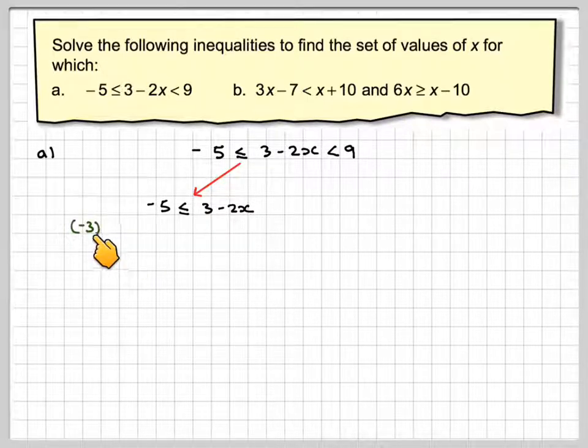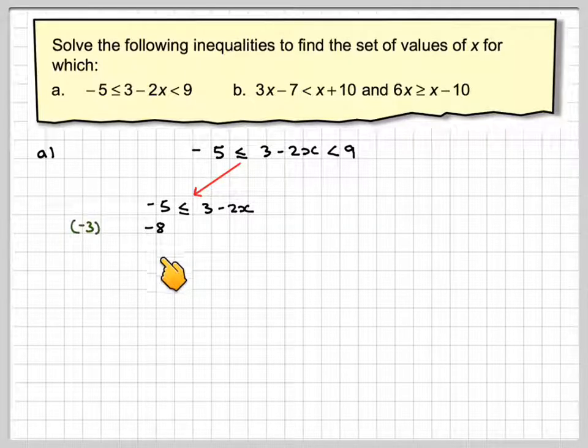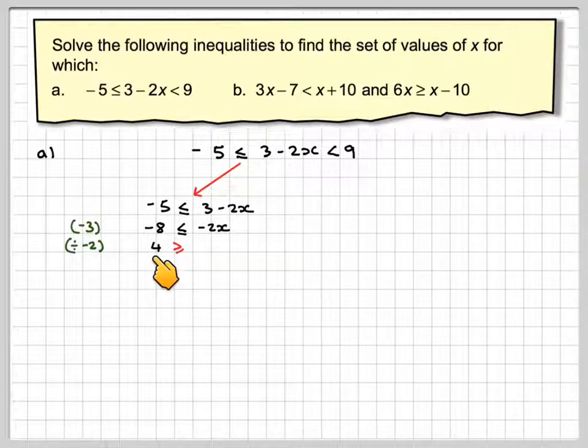Take 3 from both sides. Minus 5 take away 3 is minus 8. On this side you get minus 2x. Now you're dividing by minus 2, and you know that means we've got to invert the inequality. Minus 8 divided by minus 2 is plus 4, so reversing the inequality sign, x is less than or equal to 4.